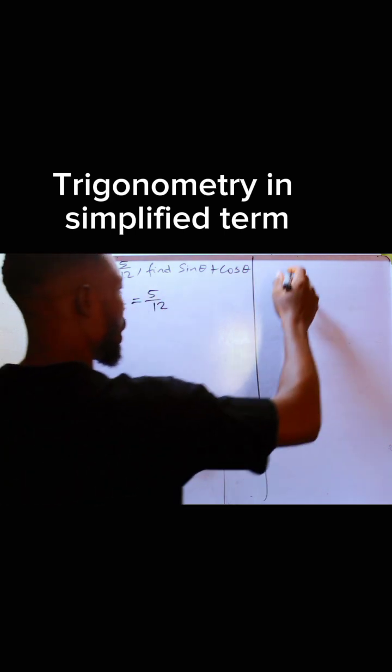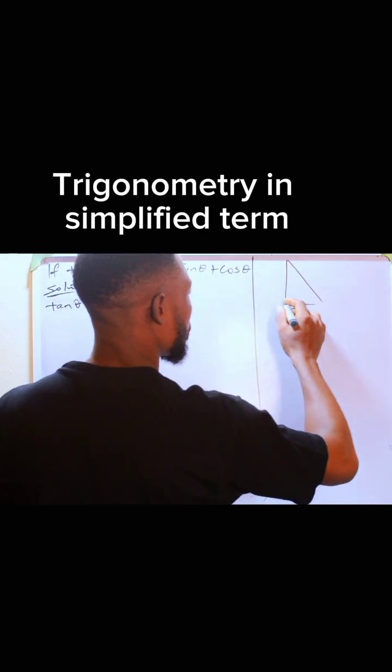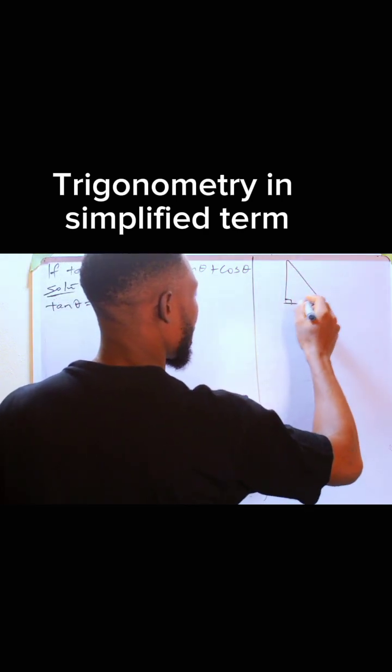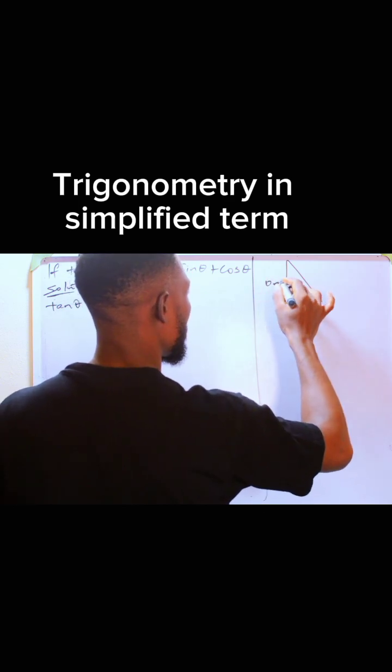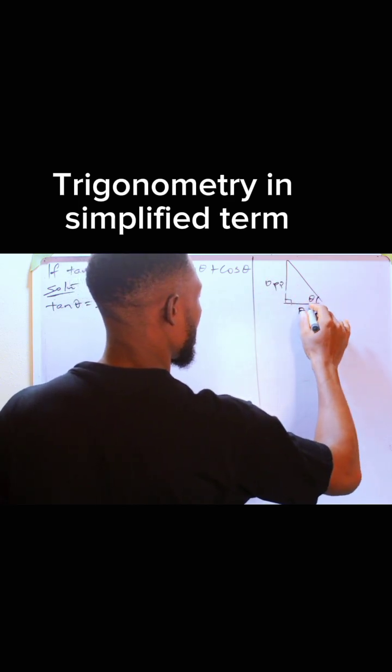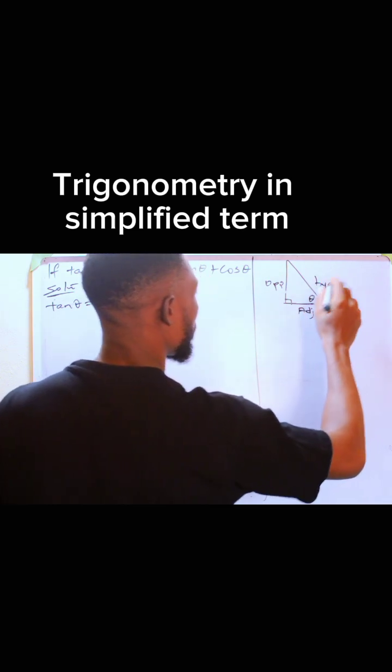Let me draw this being a right angle triangle. If this is the right angle and this is the reference angle θ, then here is opposite, here is adjacent, and this is of course the hypotenuse.